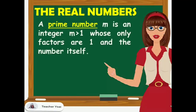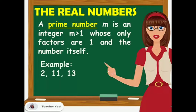A prime number M is an integer M greater than 1 whose only factors are 1 and the number itself. Examples are 2, 11, and 13, among others.